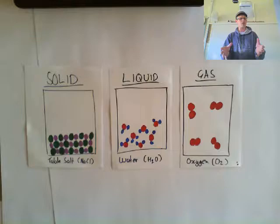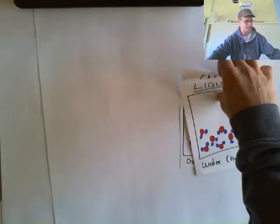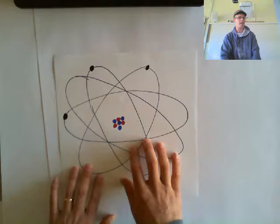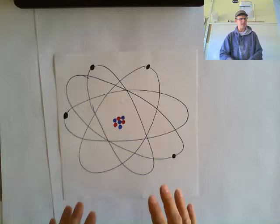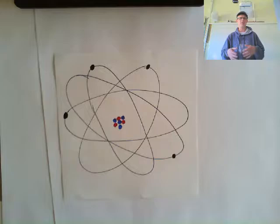Now we want to look even closer at an atom. Let's take one of these atoms and zoom in even more so we can see what's inside it. What I've got here is a magnified view of one atom. It's not a perfect representation of what an atom would look like, but it's close enough for now — it's what we need to get our head around what an atom looks like.